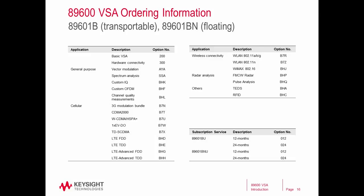This slide shows all of the optional capability that can be purchased with the 89600 VSA software depending on your application or the types of signals you're measuring. The base configuration is option 200 and 300, which gives you basic VSA capability and connectivity to Keysight hardware. Then depending on the signal formats you're using, you can configure other modulation-specific options. Also shown are update subscription services available for 12-month or 24-month periods, as well as both a floating license — a server-based license shareable by multiple users — and a transportable license that resides on a single instrument or PC but can be moved around as needed.